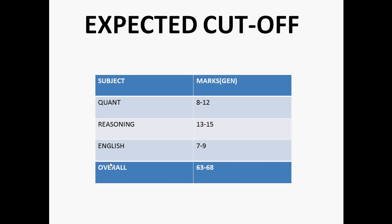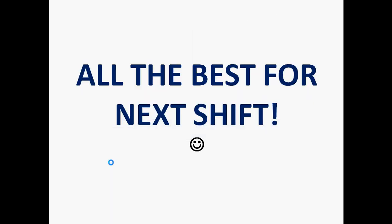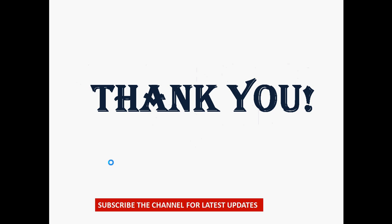The sectional cutoff is around 8 to 12 marks for quant, around 13 to 15 for reasoning, and 7 to 9 marks for English. The overall cutoff is around 63 to 68 marks. All the best for all the upcoming exam sets. Thank you for watching this video — please subscribe to our channel for more banking-related videos.